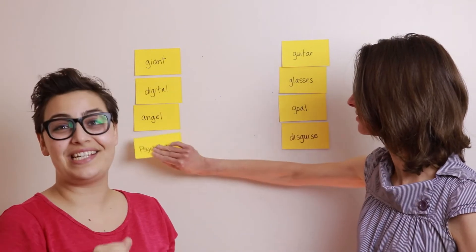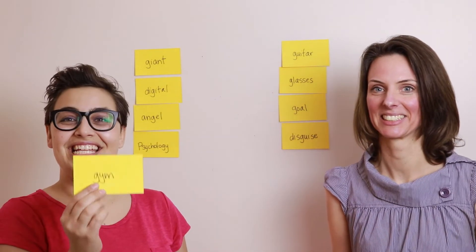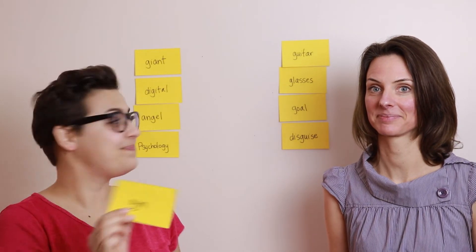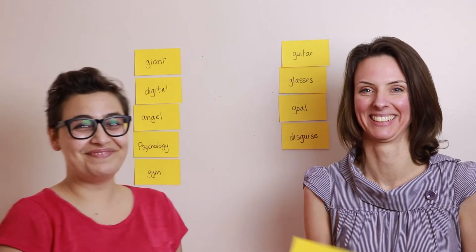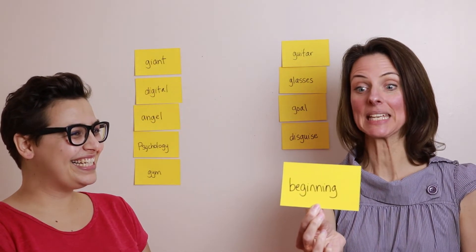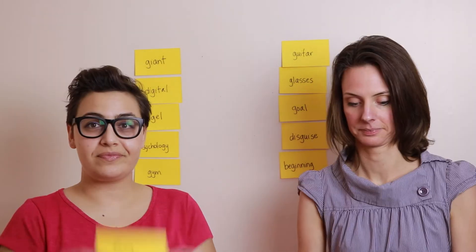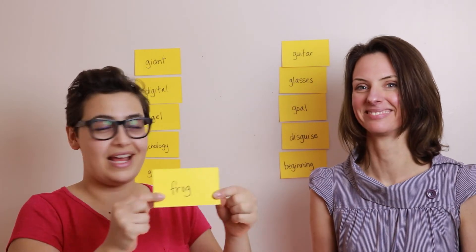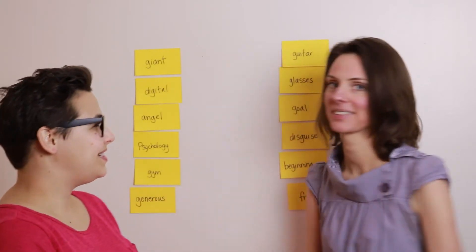'Psychology' — that's a crazy spelling in that word. 'Gym' — soft. Do you like to go to the gym? No, I hate it. 'Beginning' — soft. 'Frog' — over to the hard side. And 'generous' — soft.